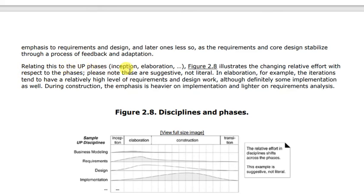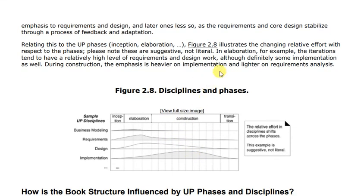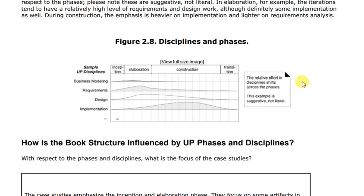Relating this to the UP phases — Inception and Elaboration — figure 2.8 illustrates the changing relative effort with respect to the phases. Please note these are suggestions and you can vary from project to project; it is just a general perception. Elaboration iterations tend to have a relatively high level of requirements and design work, while during Construction, emphasis is heavier on implementation and lighter on requirement analysis.